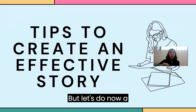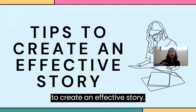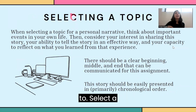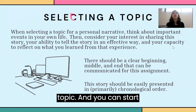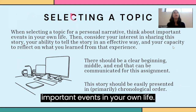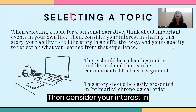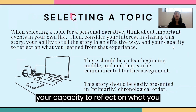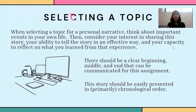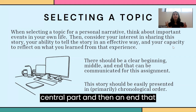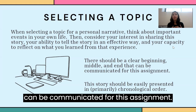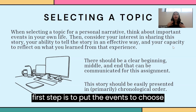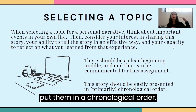Let's discover how to create an effective story. First of all, you have to select a topic — you can start from a personal narrative, think about important events in your own life. Consider your interest in sharing this story, your ability to tell it effectively, and your capacity to reflect on what you learned. There should be a clear beginning, a central part, and an end. Choose the events you want to tell and put them in chronological order.